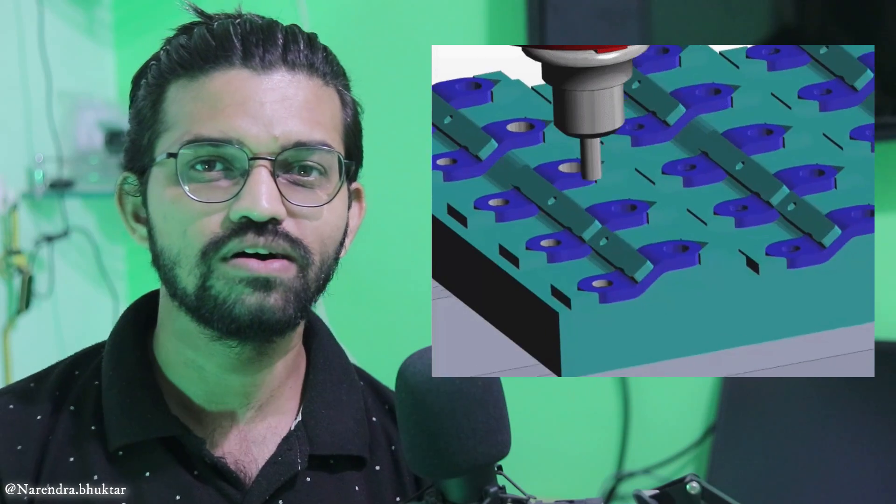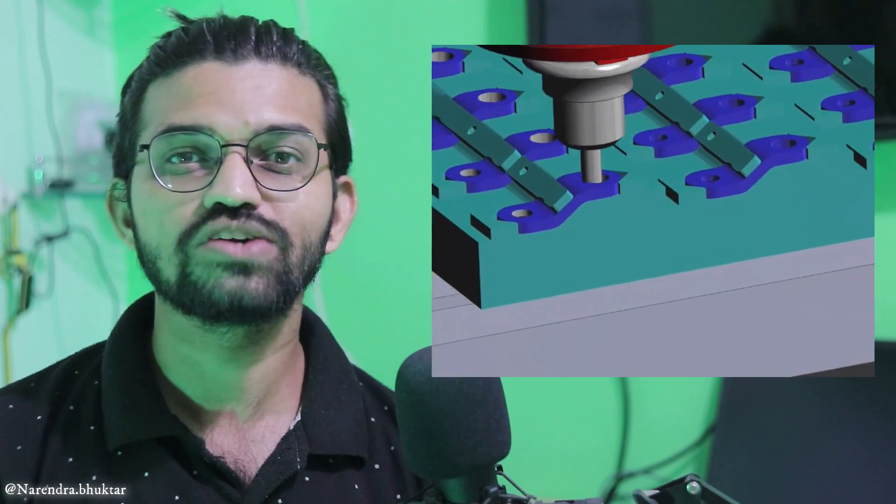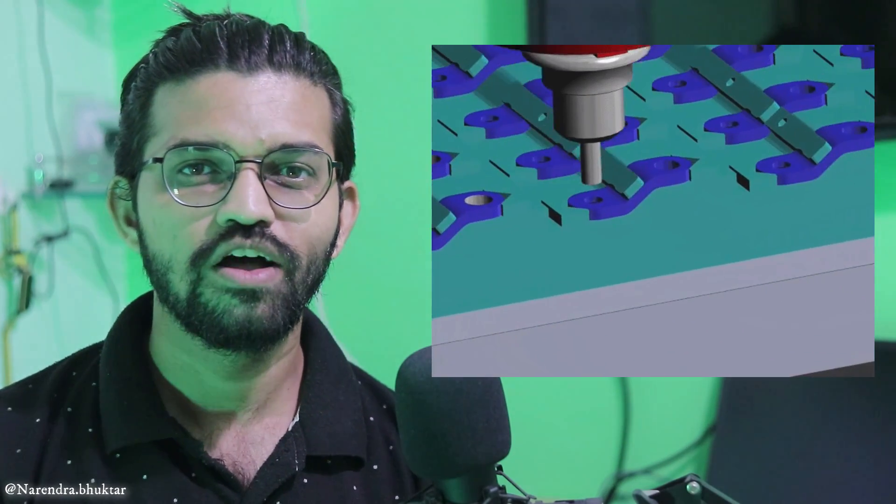So friends, why do you require these jigs and fixtures in any manufacturing industry? First of all, these jigs and fixtures increase the production rate. Nowadays majority of the manufacturing industry focuses on production rates. You need to maintain high production rates in order to achieve higher profits, and high production rates can be achieved very easily by using these jigs and fixtures.